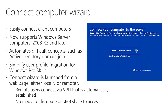You launch the Connect Computer Wizard from your browser, which works both locally and remotely. Starting with 2012, remote users can connect via VPN, which is automatically established when you start the Connect Computer Wizard. There's no media to distribute, no file share needed. You just go to the web page, start it up, and if you're remote from the server, it will automatically establish a VPN connection and allow you to join the domain for the Essentials environment.